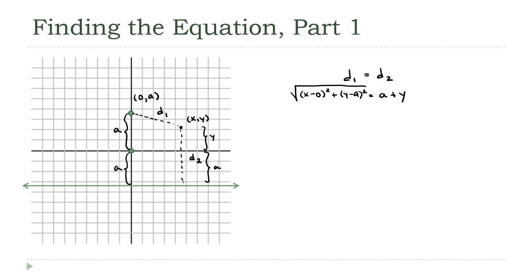Well, good, now I've got an equation with x's and y's. All I want to do now is simplify this. So I'm going to start by squaring both sides, so the square root is going to go away. And the left side will be x squared plus (y minus a) squared equals (y plus a) squared. And I'm going to multiply those two squares out: x squared plus y squared minus 2ay plus a squared equals y squared plus 2ay plus a squared.